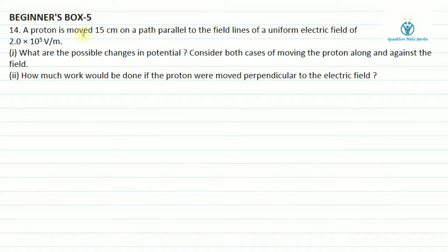Hello friends, beginner box 5 electrostatics neat case question mein humme diya gaya hai: A proton is moved 15 centimeter on a path parallel to the field lines of a uniform electric field of 2 into 10 raise to power 5 volt per meter. First part: what are the possible changes in potential? Consider both cases of moving the protons along and against the field. Second part: how much work would be done if the proton were moved perpendicular to the electric field?